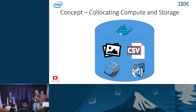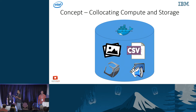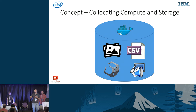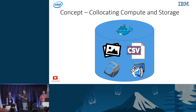The concept here is to co-locate compute in the storage system. The reason I'm drawing a Docker container as the compute engine is because we're not talking about any computation — we're talking about computations that are uploaded by the users, so we want them to be isolated. I could have drawn KVM or anything else, but since we're working with Docker, there's the Docker logo.